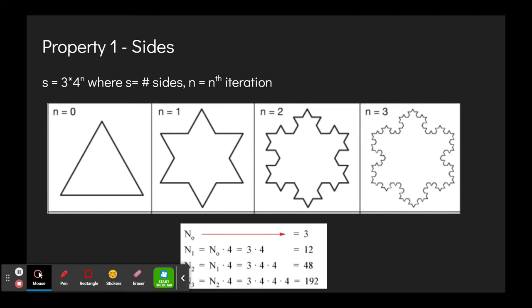The first property that we will be exploring is sides. The formula to find the number of sides is s equals three times four to the n, where s is the number of sides and n is the nth iteration. Each side gains a new triangle in the next iteration.